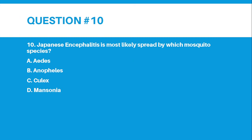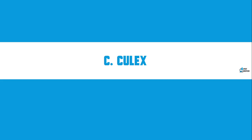Number 10. Japanese encephalitis is most likely spread by which mosquito species? Letter A, Aedes; B, Anopheles; C, Culex; or D, Mansonia. And the answer for number 10 is letter C, Culex.